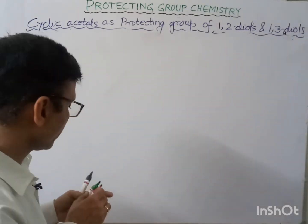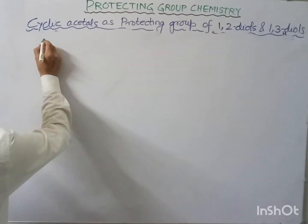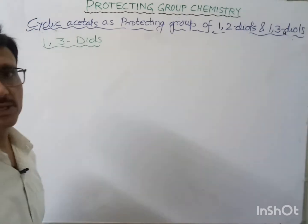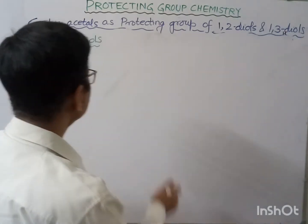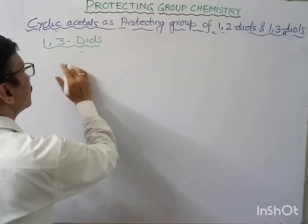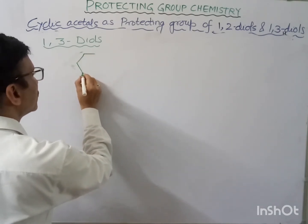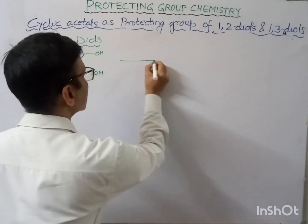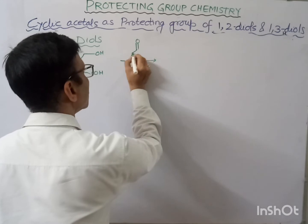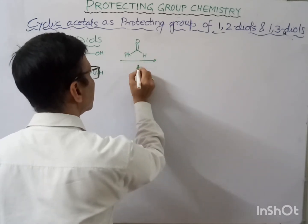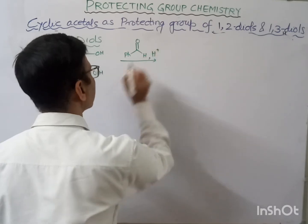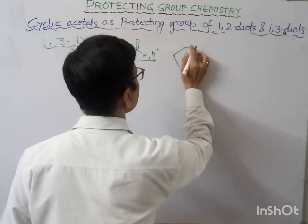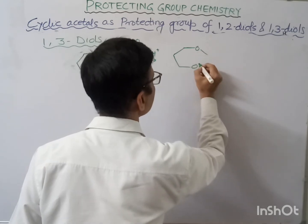So if we have a 1,3-diol, it can be protected by using benzaldehyde in the presence of an acid catalyst, and we will get a six-membered ring.